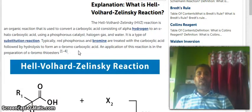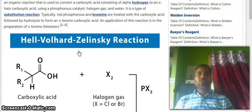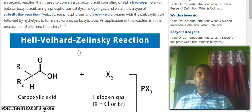The Hell-Volhard-Zelinsky HVZ Reaction is an organic reaction that is used to convert a carboxylic acid consisting of alpha-hydrogen to an alpha-halo carboxylic acid using a phosphorus catalyst, halogen gas and water. It is a type of substitution reaction.